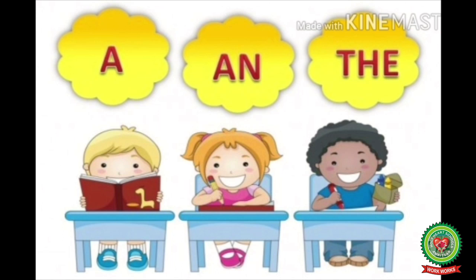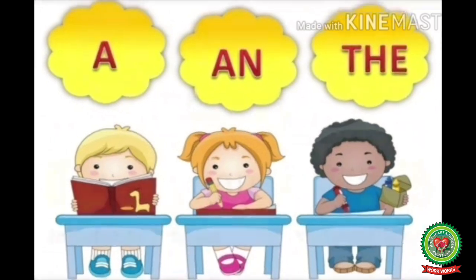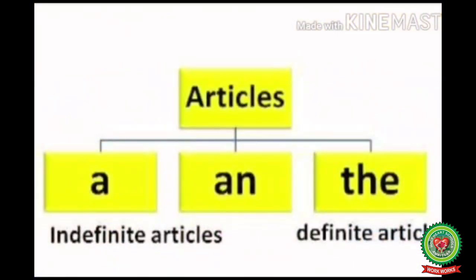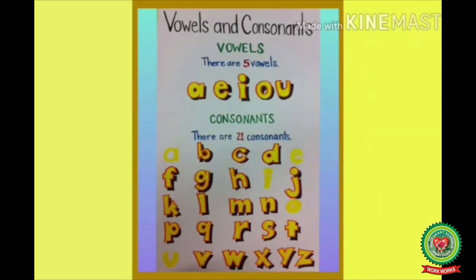Kids, there are three types of articles: number one 'a', number two 'an', and number three 'the'. 'A' or 'an' are known as indefinite articles, as they do not refer to any particular person or thing. Whereas the article 'the' is known as the definite article, as it refers to a particular person or thing.